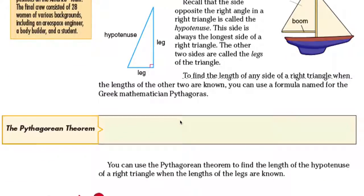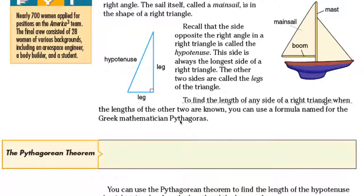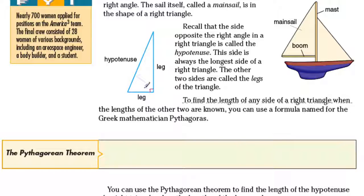Recall that the opposite side of the right triangle is called the hypotenuse. The hypotenuse is always the longest side of the right triangle. The other two sides are called the legs of the right triangle.